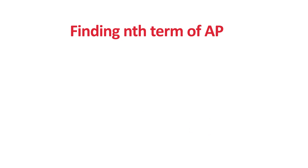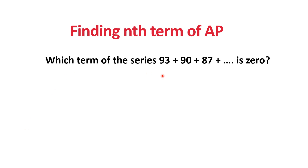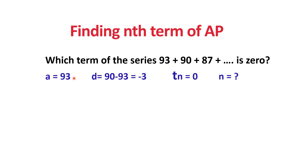Now let us solve a problem to find the nth term of an Arithmetic Progression. The question is: which term of the series 93, 90, 87, ... is 0? So 0 is a term in this series and we have to find which term it is. The given values are: A = 93, D = 90 − 93 = −3, and Tn = 0. We need to find n.